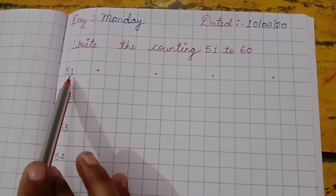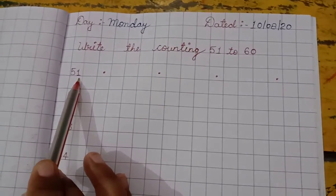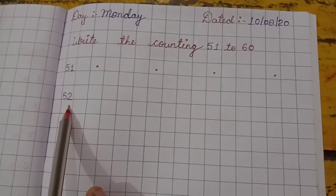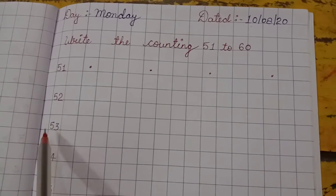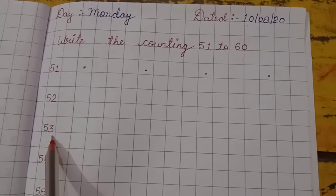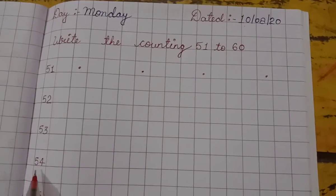Start kate. 5, 1, 51. 5, 2, 52. 5, 3, 53. 5, 4, 54. 5, 5, 55.